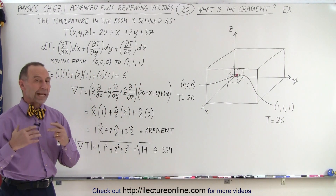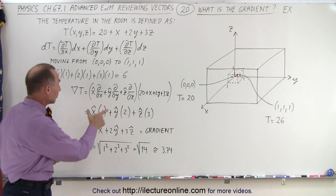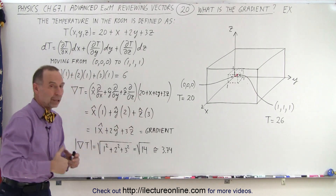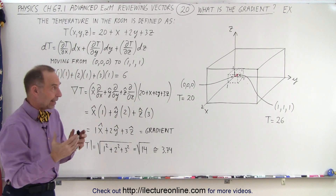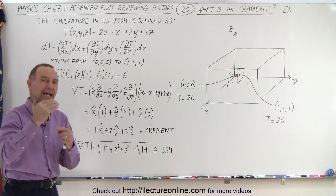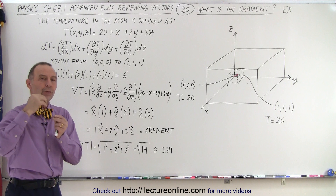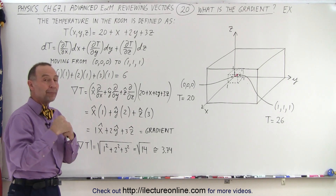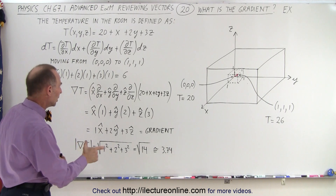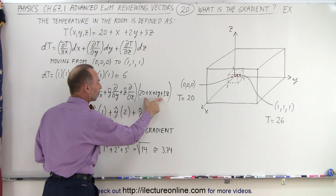Now we're going to take the gradient. The gradient is the del operator operating on a scalar function. The result — the gradient — is a vector that tells us the direction and the magnitude: the direction in which we should travel to get the greatest change in temperature, and how big that change would be when we move in that direction. Here's the del operator operating on the scalar function.